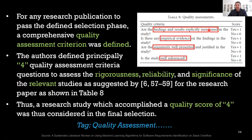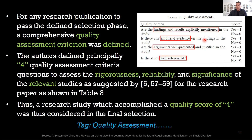If a criterion is covered in that paper, give it a score of one; if not, give it a score of zero. In this paper, the authors defined four quality assessment criteria questions to assess the rigorousness and significance of the study. A research study which accomplished a quality score of four was considered in the final selection — papers scoring less than four were not included. This is just one approach and you have the option to customize it to your study.